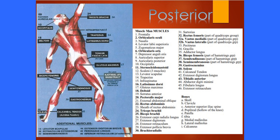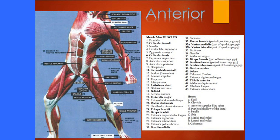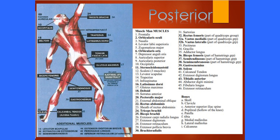Moving to the anterior neck: number eleven is the sternocleidomastoid — sterno means sternum, cleido means clavicle, and mastoid is the mastoid process behind the ear on the temporal bone. It's a flexor of the neck, attaching the sternum, clavicle, and mastoid process. On the posterior side, number ten is occipitalis, covering the occipital bone, and number nine is auricularis posterior.